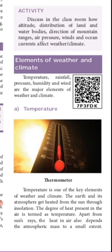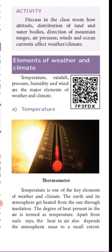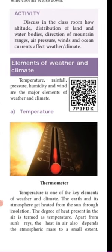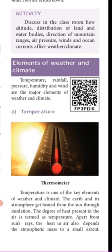Let us see temperature. Temperature is one of the key elements of weather. The earth and its atmosphere get heated from the sun through insolation. The degree of heat present in the air is termed as temperature. We can feel the wind as hot or cold — sometimes it is very chill, sometimes it has more heat. That is what determines the temperature. Apart from the sun's rays, heat in the air also depends on the atmospheric mass to a small extent.